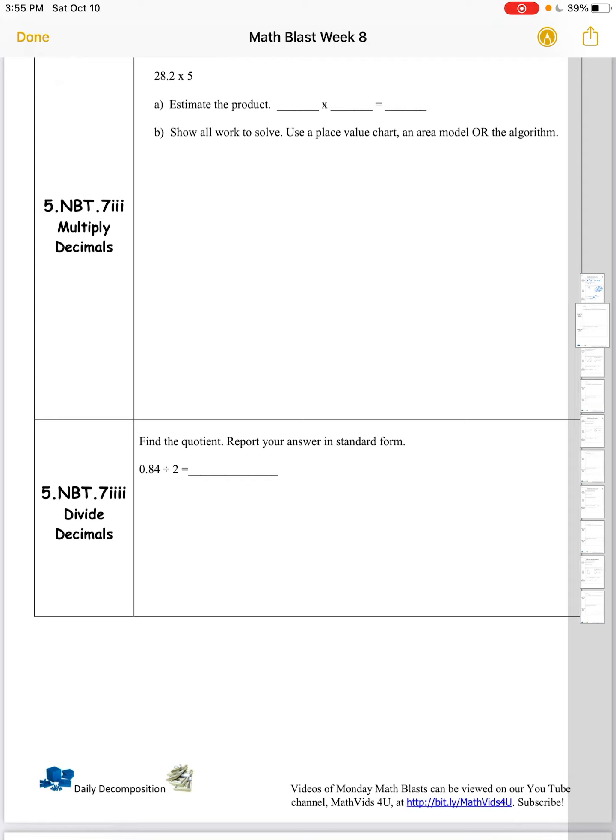On the back side, we have multiply decimals. 28.2 times 5. Estimate the product. 28.2, we could round to 30, and we're going to multiply that by 5. Now keep in mind, 30 is three tens times 5. So three times five is 15, but keep in mind those are tens, so it's 15 tens, which is equal to 150. Show all work to solve. Use a place value chart, an area model, or the algorithm. Here we're going to use an area model.